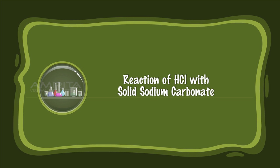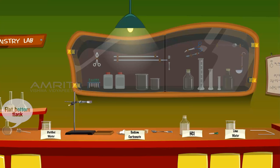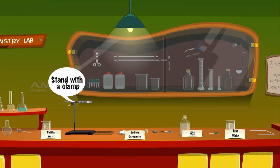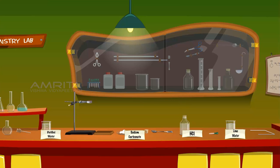Reaction of HCl with Solid Sodium Carbonate. We require a flat bottom flask, a thistle funnel, a connecting glass tube, distilled water in a beaker, a stand with a clamp, some sodium carbonate in a dish, double board cork, spatula, HCl solution, a dropper, and lime water in a beaker.